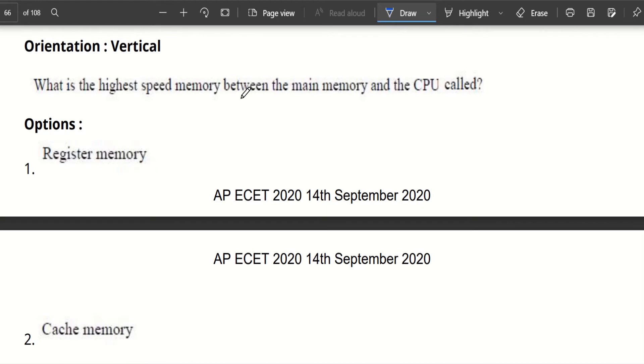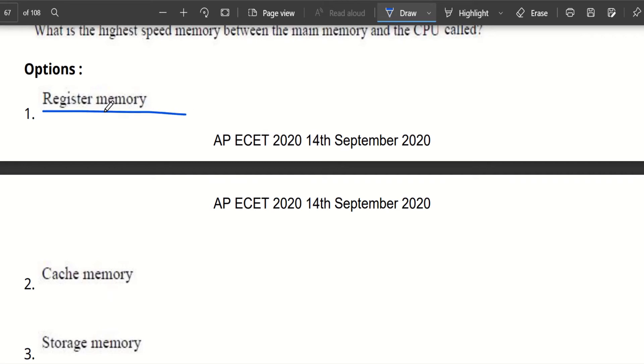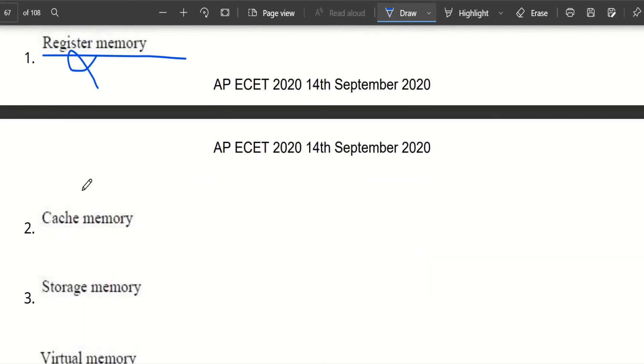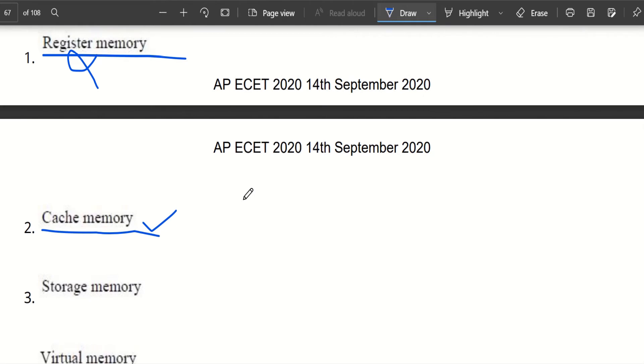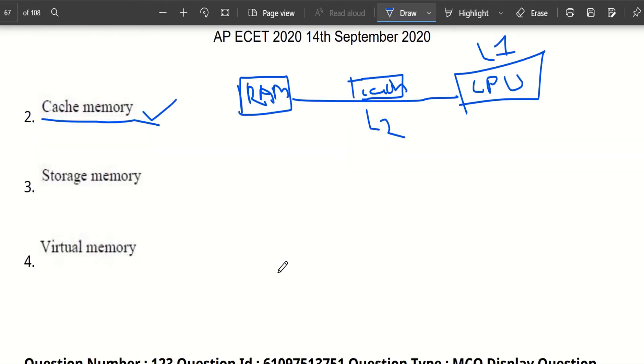What is the highest speed memory between the main memory and the CPU called? We will see the options: Register memory - it's not, because CPU is itself a combination of registers. Cache memory - yes, we will have cache memory in between RAM and CPU. Here is RAM and here is CPU. In between we will have cache memory. In depth we can see here we will have level 2 cache and on CPU we will have level 1 cache. Now let's move to our next question.